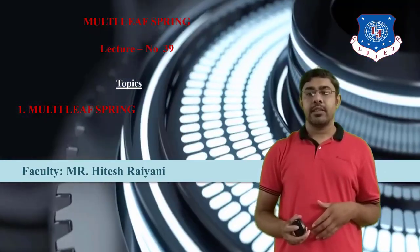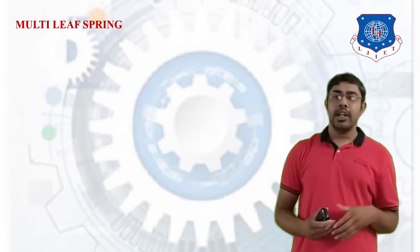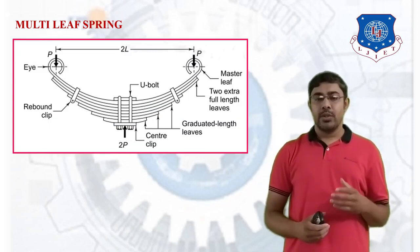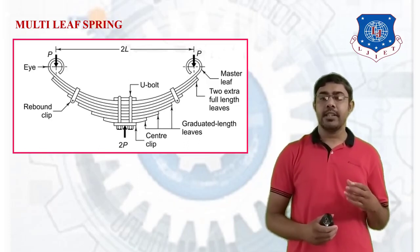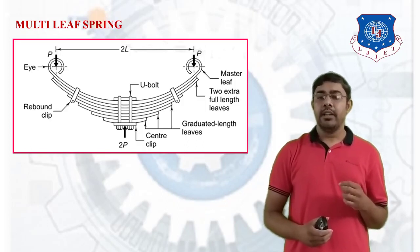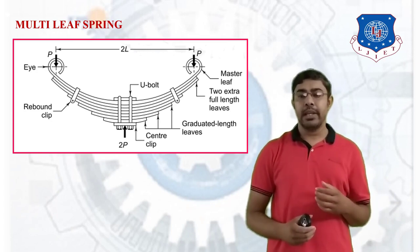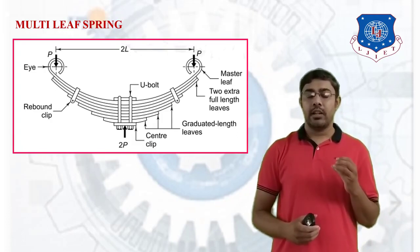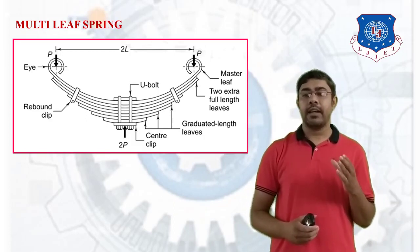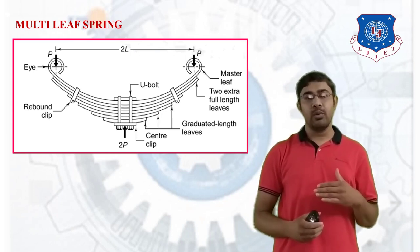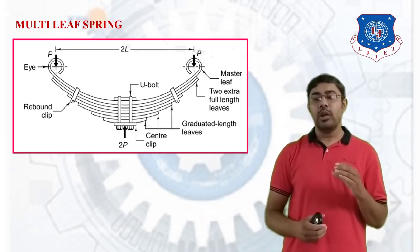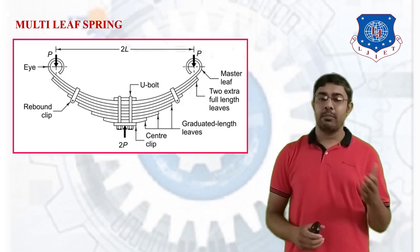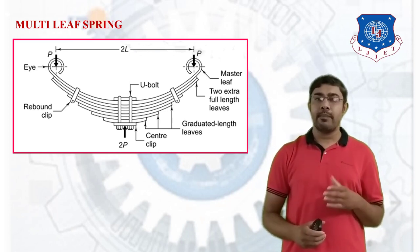Let's consider the multi-leaf spring as shown here. In this spring there is one master leaf, followed by two extra full length leaves and then graduated length leaves. All leaves are combined by clips and clamped by center clips and rebound clips at both ends. This is the structure of multi-leaf springs.